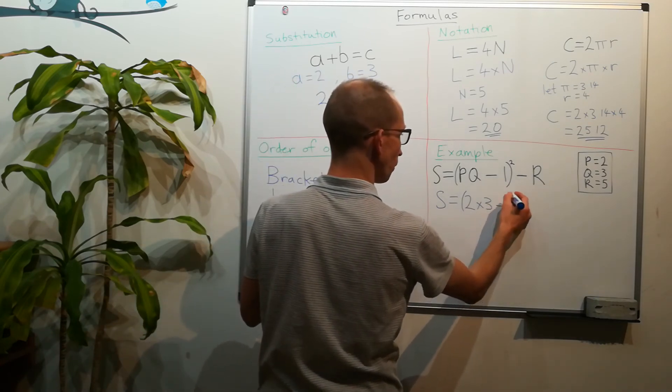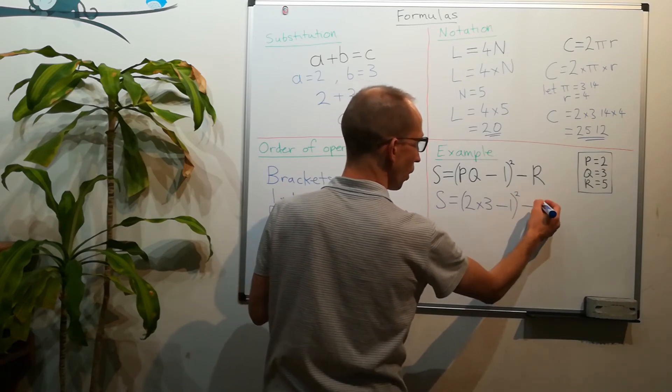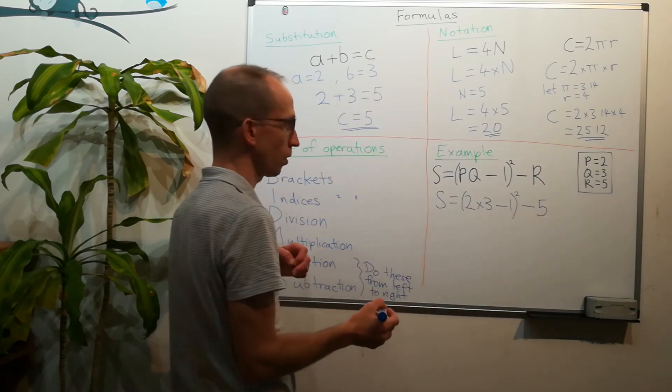Minus 1, we've still got that squared, and instead of r we've got 5. So the first thing we're going to do is our brackets.